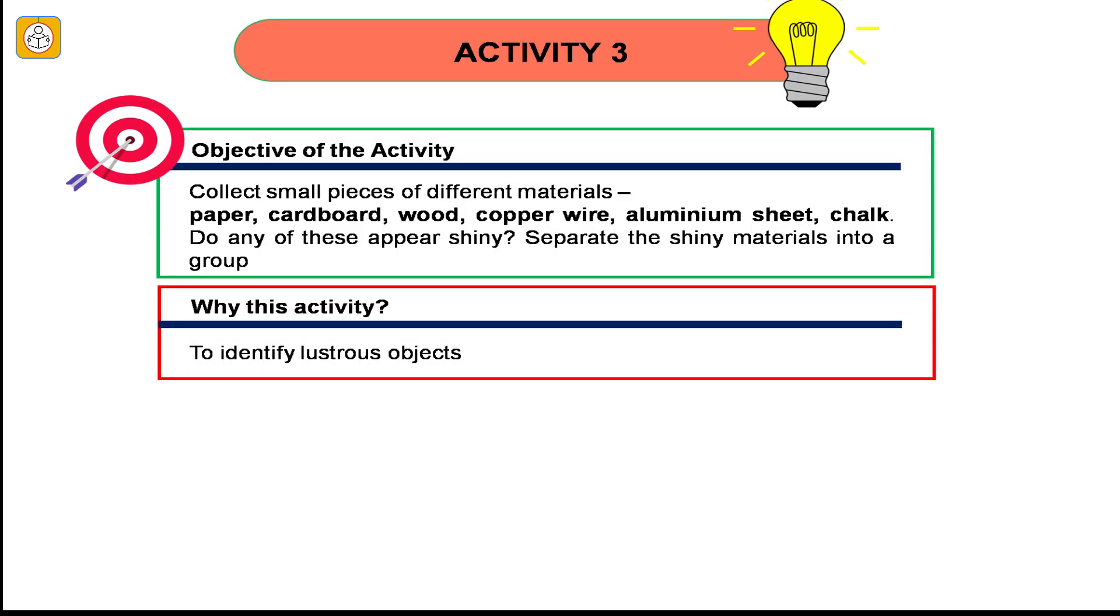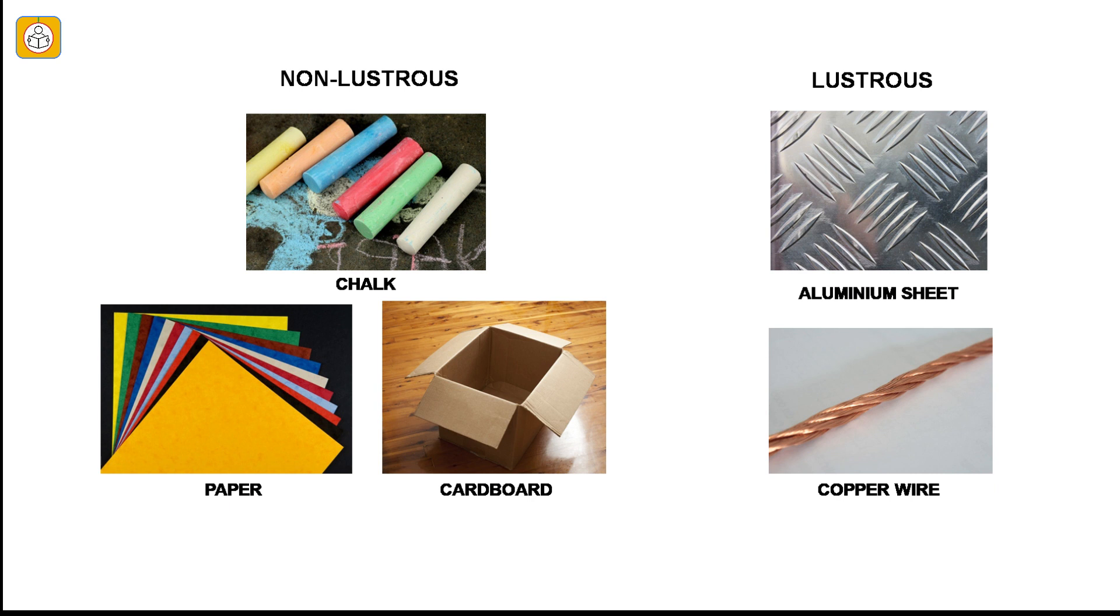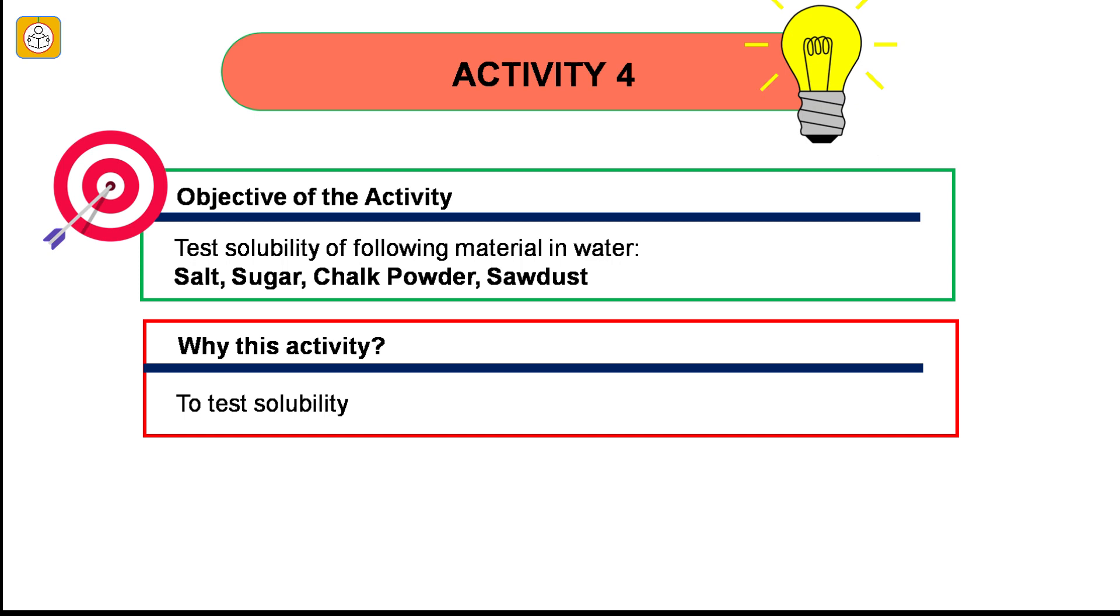Activity number 3: Collect small pieces of different materials. Paper, cardboard, wood, copper wire, aluminum sheet, chalk. Do any of these appear shiny? Separate the shiny materials into a group. Now why this activity? This activity is to be undertaken to identify lustrous objects. We see that copper wire and aluminum sheet are lustrous objects whereas paper, cardboard, wood and chalk are non-lustrous or non-shiny objects.